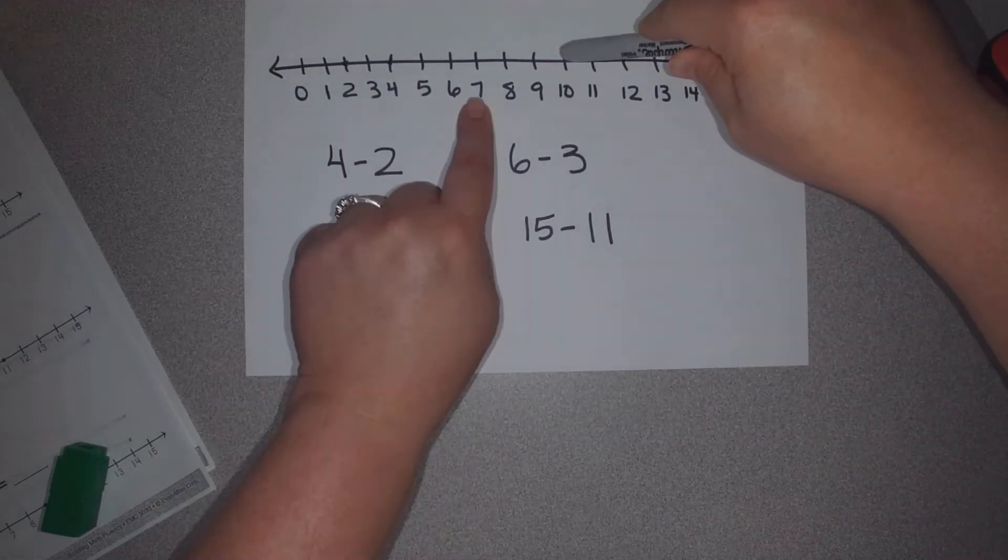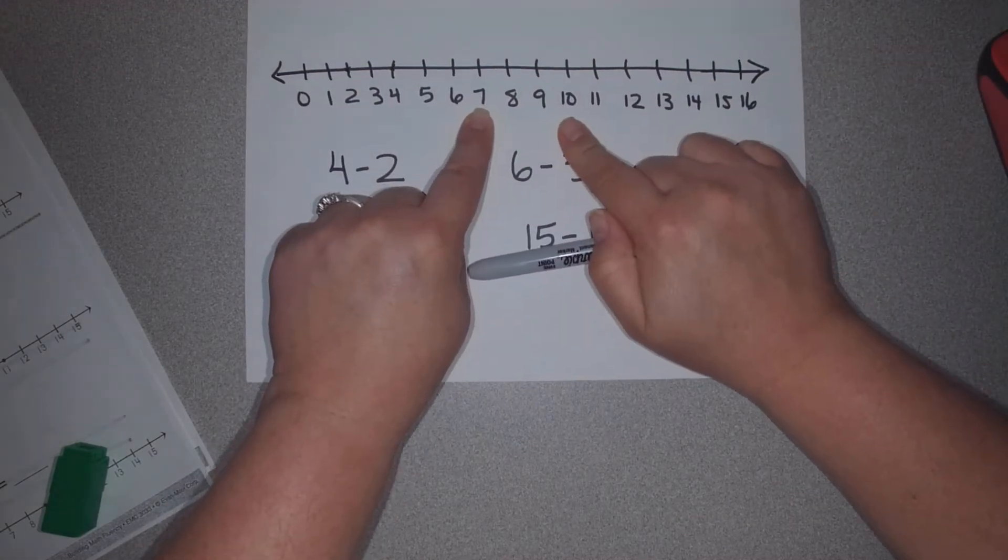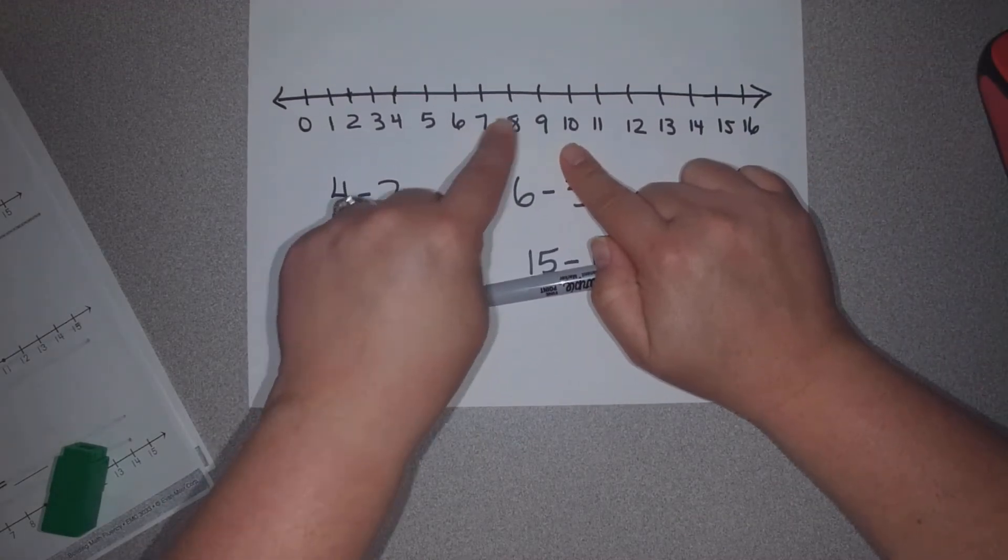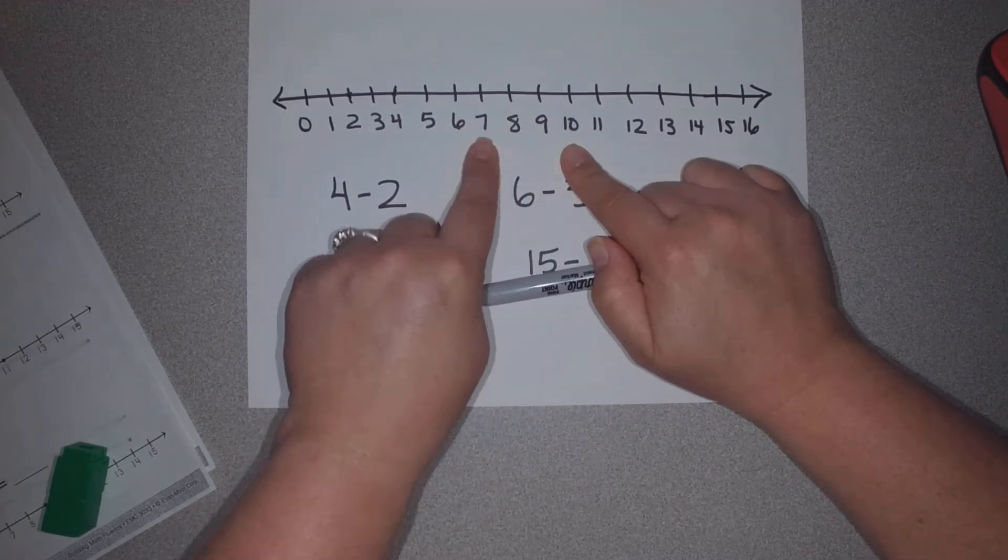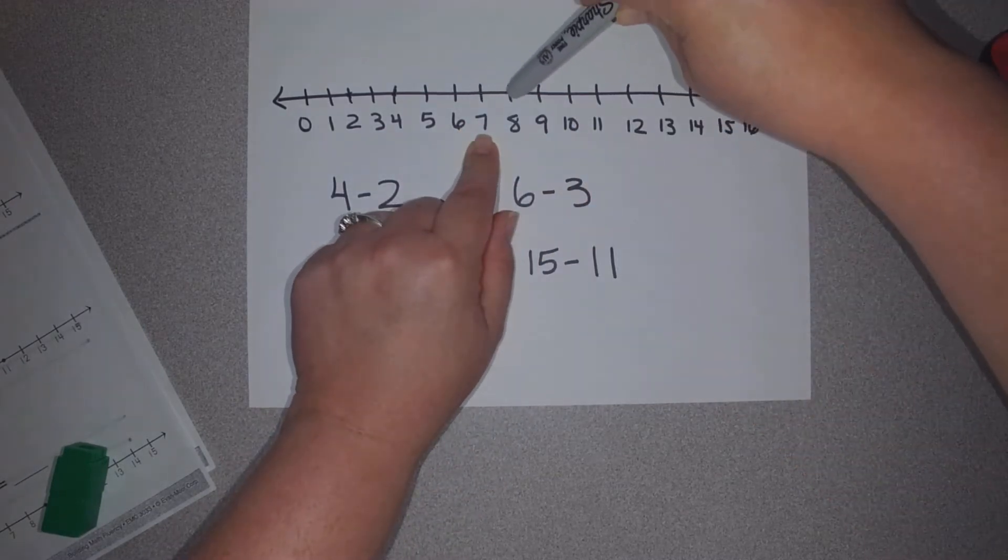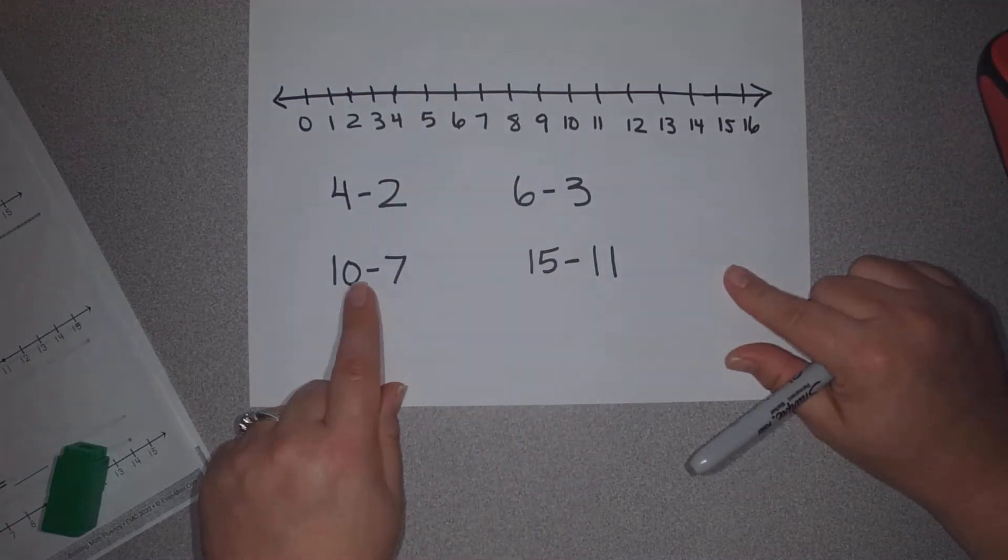Over here with 10 and 7, I want to find the difference between these two numbers. I could count backward, but counting up is a little easier. So I'll start at the 7 and I'll go 8, 9, 10. I made 3 jumps. The difference is 3.